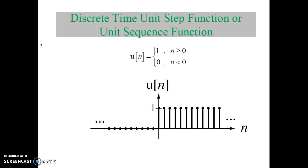Next, discrete time unit step function, also called the unit sequence function. The discrete time unit step function is represented as U(N) and can be mathematically expressed as: U(N) = 1 for N ≥ 0, and U(N) = 0 for N < 0. Such a function is called the unit step function.